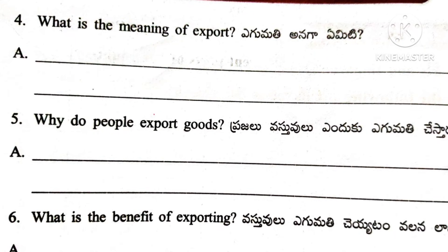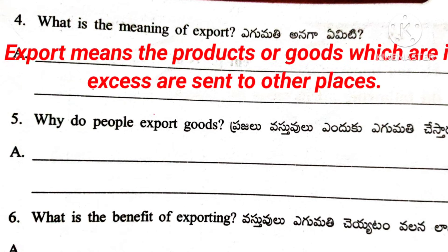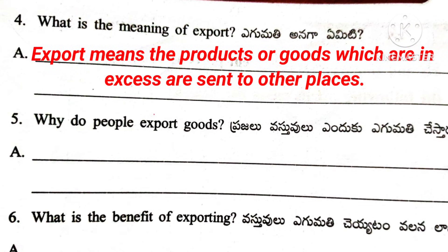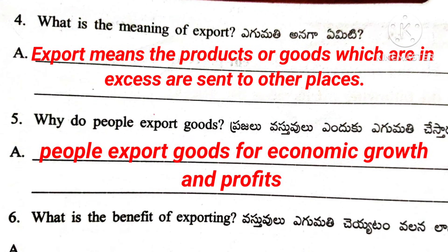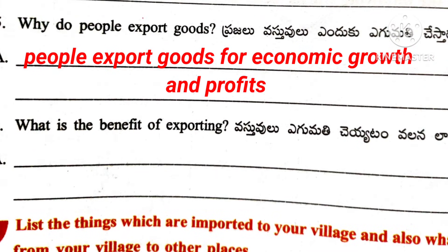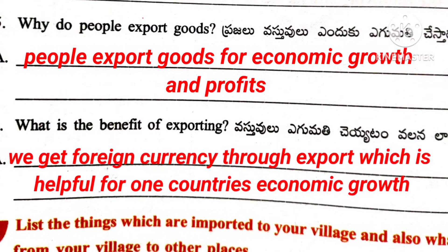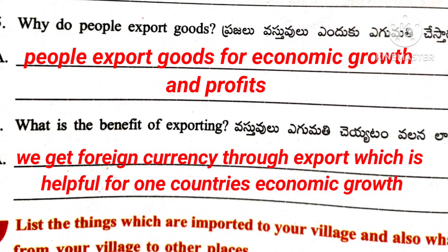Question number 4: What is the meaning of export? Answer: Export means the products or goods which are in excess, sent to other places. Question number 5: Why do people export goods? Answer: People export goods for economic growth and profits. Question number 6: What is the benefit of exporting? Answer: We get foreign currency through export, which is helpful for a country's economic growth.